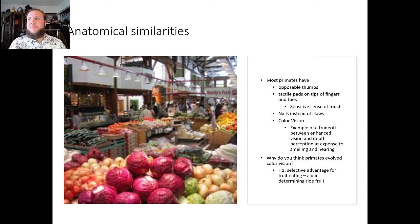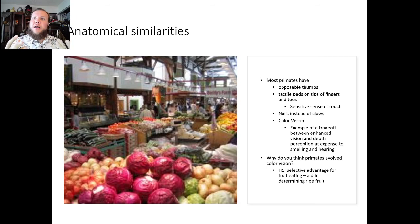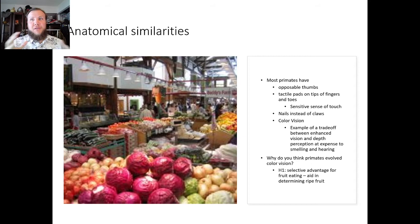In anatomical similarities, we all have opposable thumbs, tactile pads on our fingers, and nails instead of claws. We also have color vision — a trade-off between enhanced vision and depth perception versus expensive smelling and hearing. We can see better than a dog, while a dog can smell and hear better than we can. We think this developed because we like fruit — we wanted the ripest fruit, so we adapted to being visual and seeing color. Another side theory is that our earliest primate ancestors wanted fermented beverages — essentially, we wanted to get drunk. Interesting little theory.